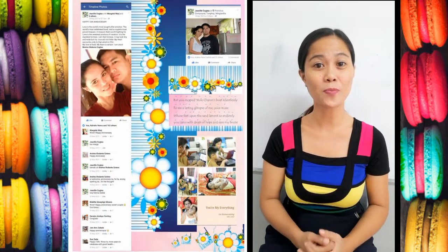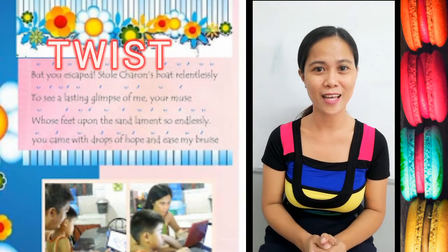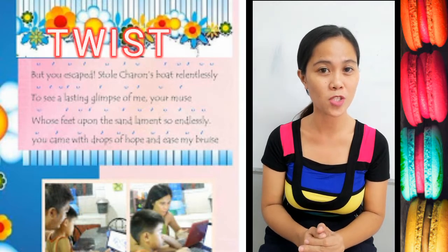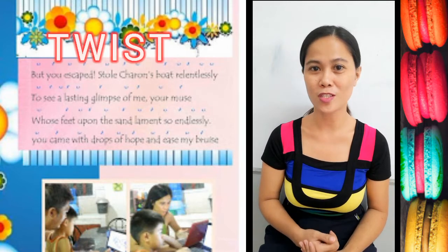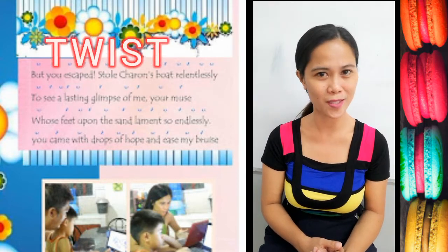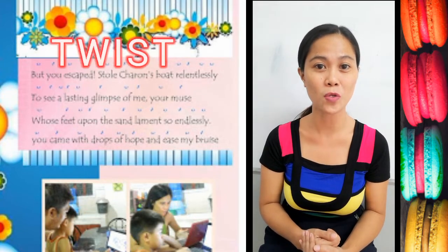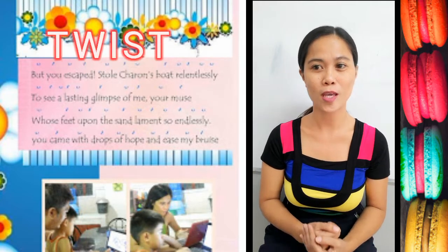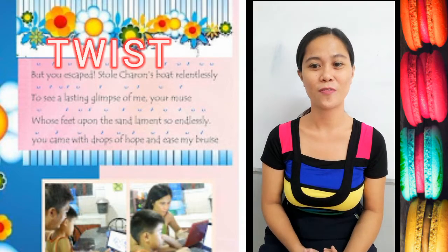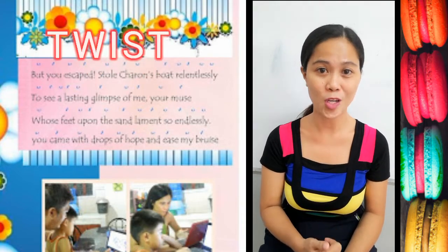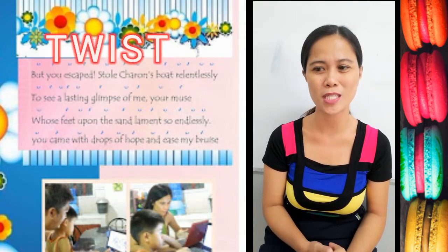That's when we go to the twist. The twist, also called the turn, is the part of the poem where if the entire poem starts from happy, the twist gives the sad part — or if it's dark, the twist gives the light. If the poem is negative, the twist gives you the positive. If it is hopeless, the twist gives hope. So it's light to dark, dark to light, positive to negative, negative to positive.